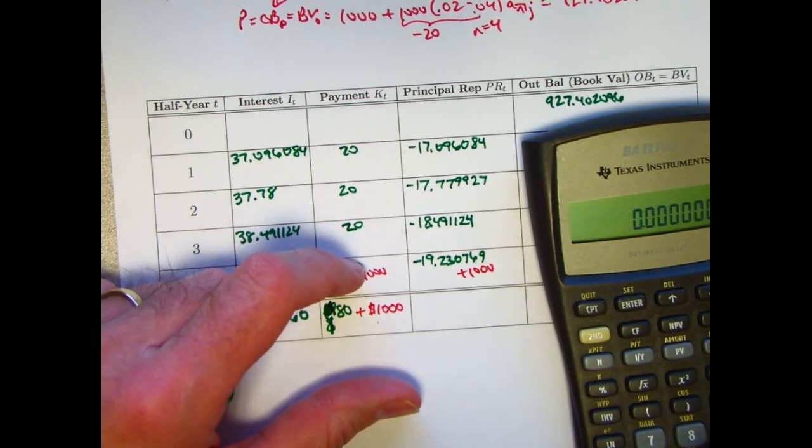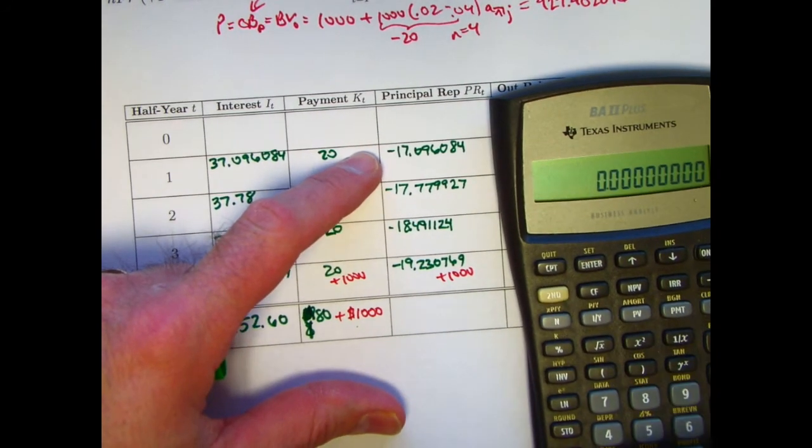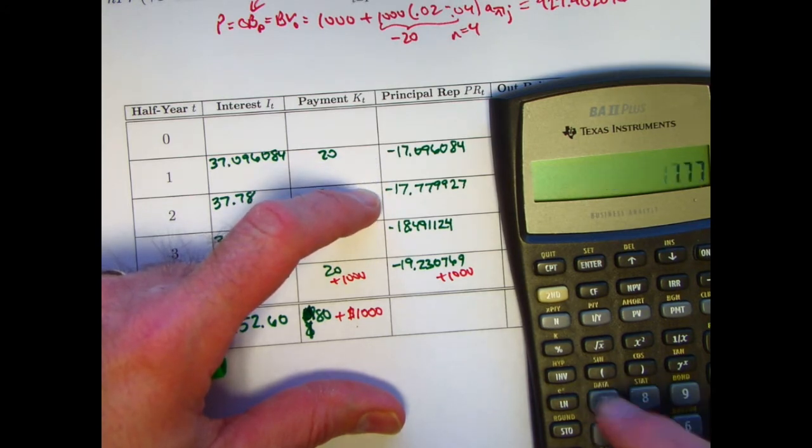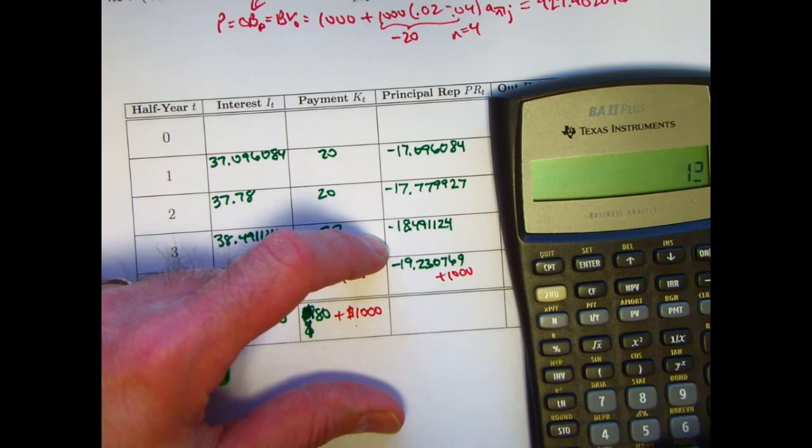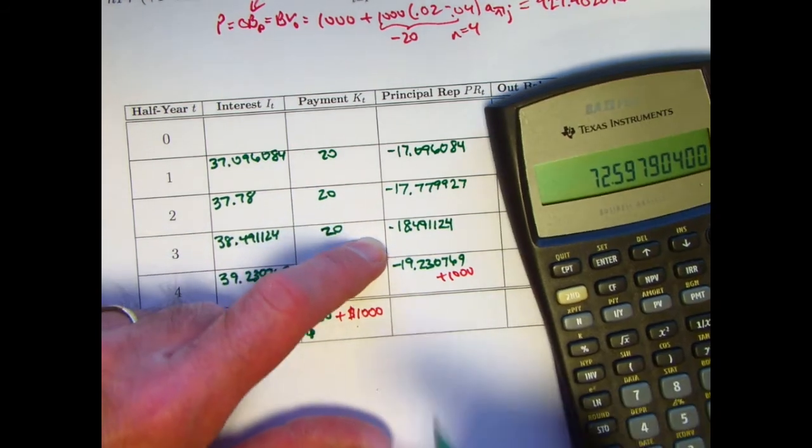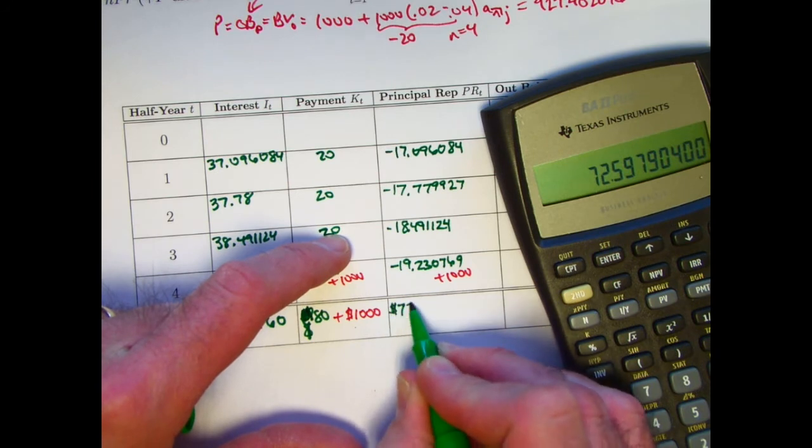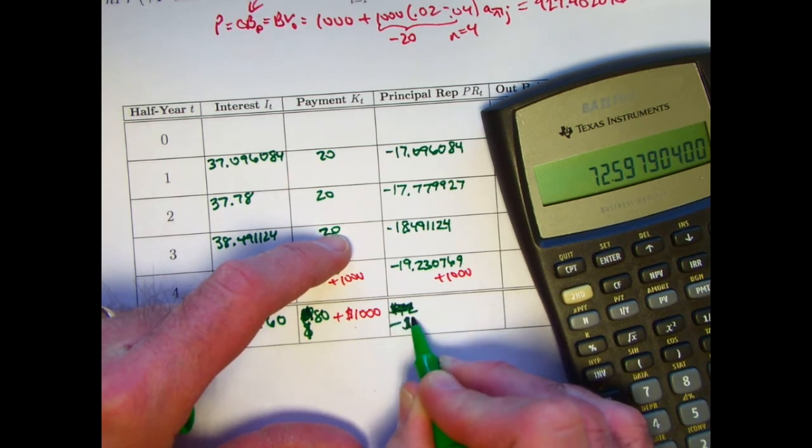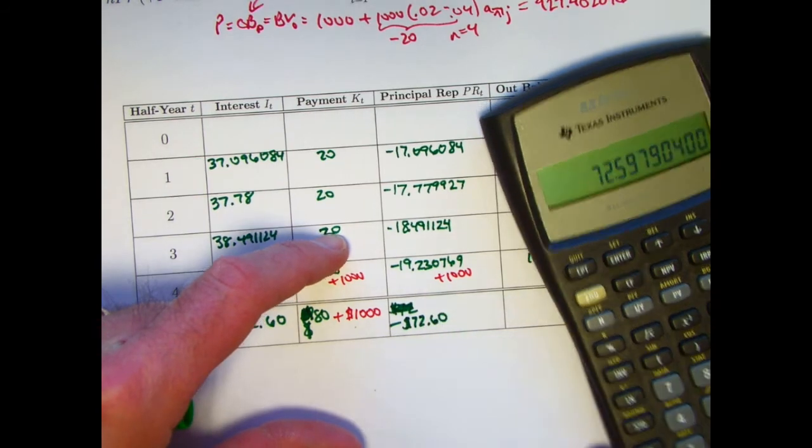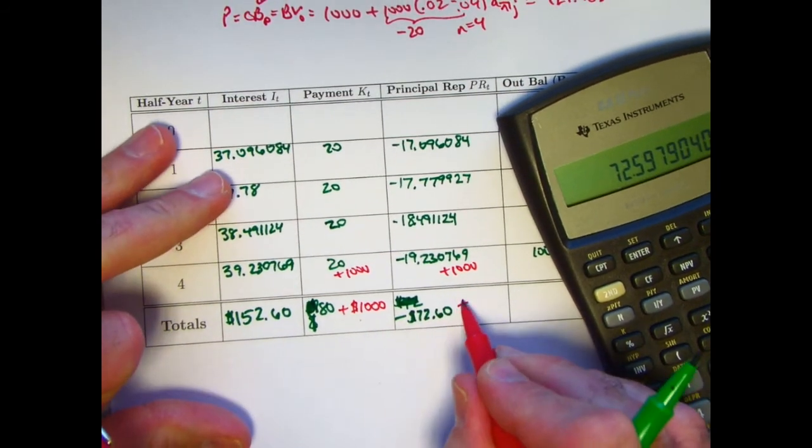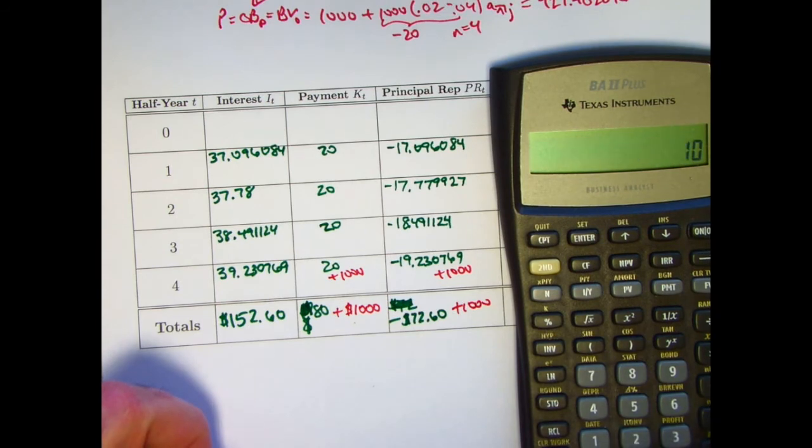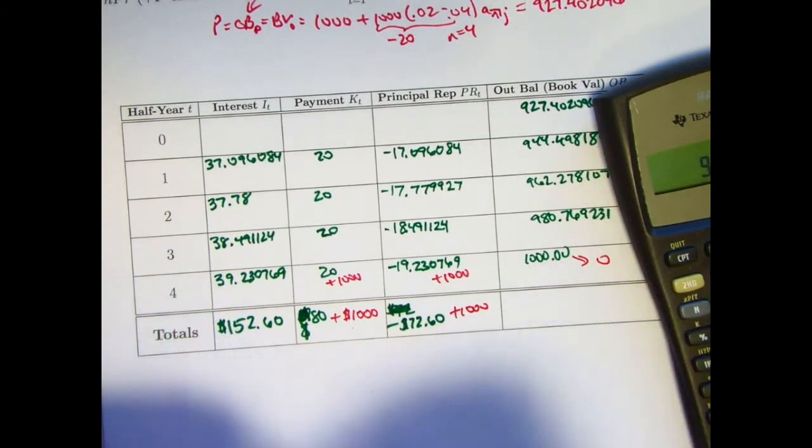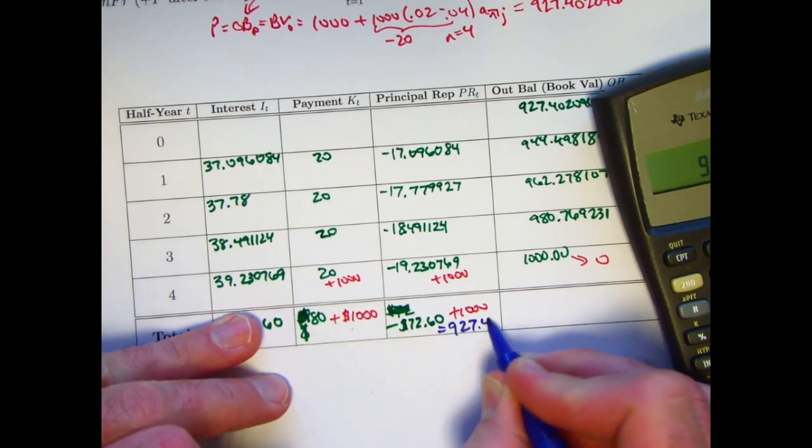Principal repaid. If you add up all those negative quantities, you get a negative quantity. I'll just type it in the calculator as positive, though. 17.096084 plus 17.779927 plus 18.491124 plus 19.230769 gives to the nearest cent 72, or negative 72.60. Add on 1,000 to that. Make this a negative. Add 1,000.